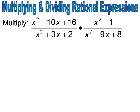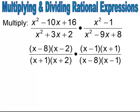Pause and try. Factoring and canceling common factors — it's very important to factor correctly. Factors of 16 that add up to negative 10 are negative 8 and negative 2. Factors of 2 that add up to 3 are 1 and 2. The difference of two squares x squared minus 1 factors to x minus 1 times x plus 1. Factors of 8 that add up to 9 are 8 and 1. After simplifying, the answer is x minus 2 all over x plus 2.